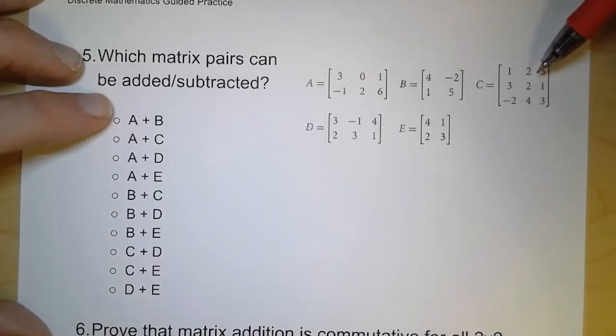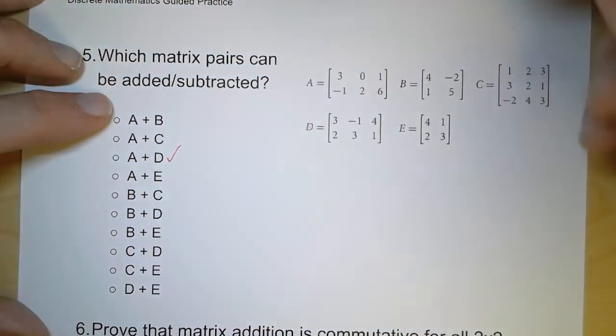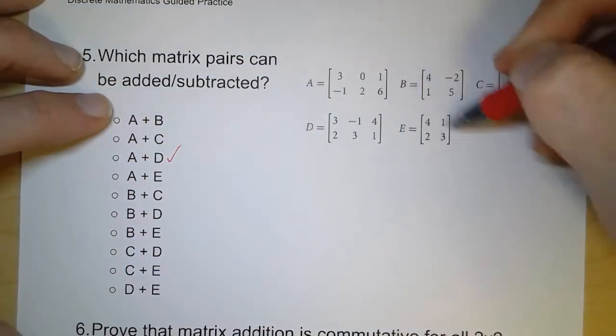A and C. Same number of columns, but different numbers of rows. That doesn't work. A and D. Yep, those are identical. So that one works. A and E. They have different numbers of columns. So now we go down. B and C. Different numbers of rows and columns. That doesn't work.